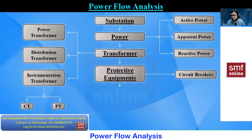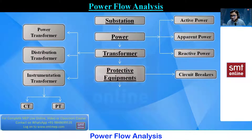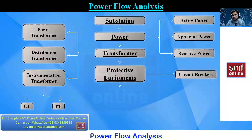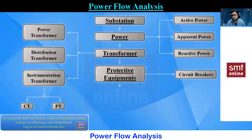Earlier we used fuses, but now they are outdated and we use circuit breakers. There are almost five to six different types: miniature circuit breaker (MCB), molded case circuit breaker (MCCB), air blast circuit breaker, vacuum circuit breaker, oil circuit breaker, and the sulfur hexafluoride (SF6) circuit breaker. We will discuss all circuit breaker types in future classes.